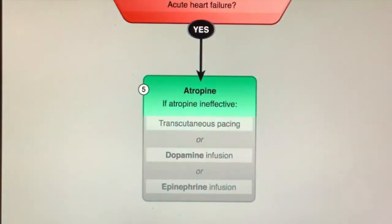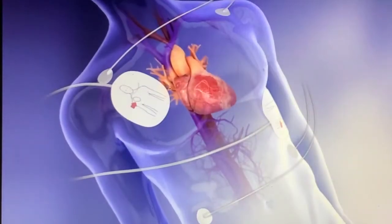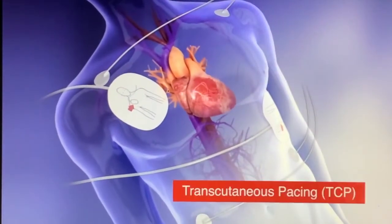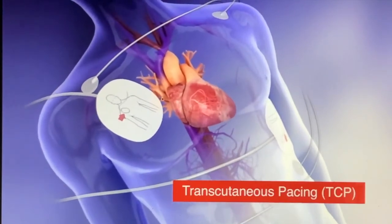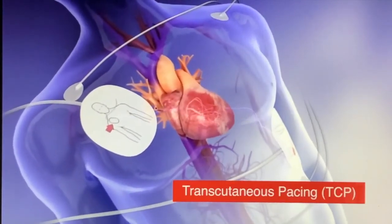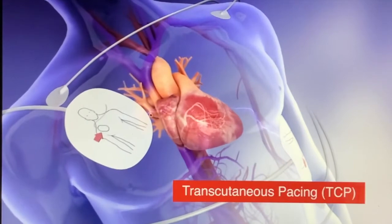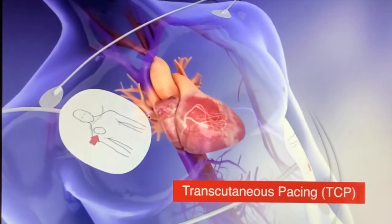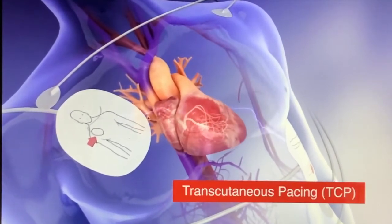If atropine is ineffective, prepare for transcutaneous pacing or consider dopamine or epinephrine infusion. Transcutaneous pacing, or TCP, uses electrodes on the patient's chest to deliver an electrical impulse that overrides the normal pacemaker functions of the heart, providing an external pacemaker signal.